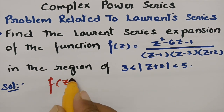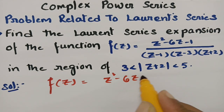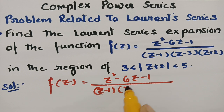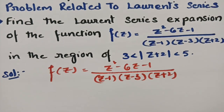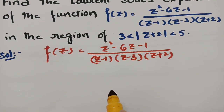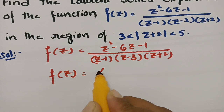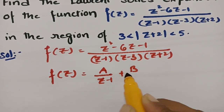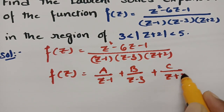Clearly, the function f(z) is given as (z² − 6z − 1) / [(z−1)(z−3)(z+2)]. We can resolve this into partial fractions, so f(z) can be written as A/(z−1) + B/(z−3) + C/(z+2). Now we need to find the values of A, B, and C.